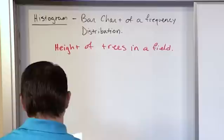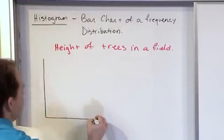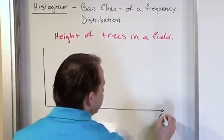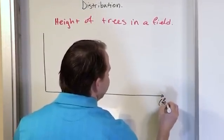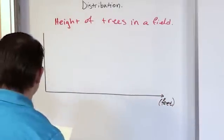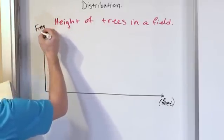So for instance, we would create something that looks like this. So we'd have our two lines right here and this would be the height in feet of the tree. Now you can use meters or whatever, it doesn't matter, but in this case we're going to use feet. And this will be the frequency, which would be the number of trees.